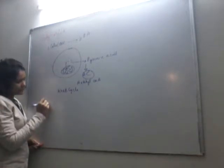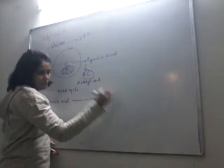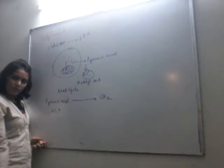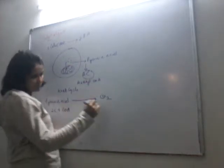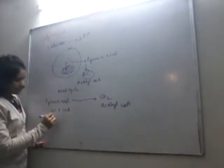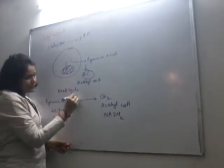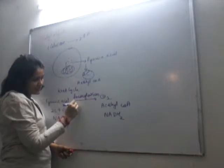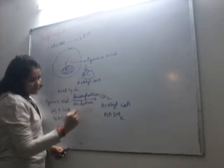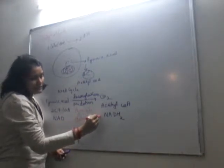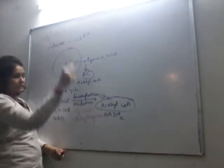In aerobic respiration, the pyruvic acid formed in glycolysis liberates a CO2, so the three-carbon molecule becomes a two-carbon acetate molecule. This acetate is accepted by coenzyme A, a sulphur-containing molecule, to form acetyl coenzyme A. During this process, one NAD is converted into NADH2. This step involves simultaneous decarboxylation and oxidation, carried out by the enzyme pyruvate dehydrogenase. That is why acetyl coenzyme A is regarded as the linking molecule between glycolysis and the Krebs cycle.